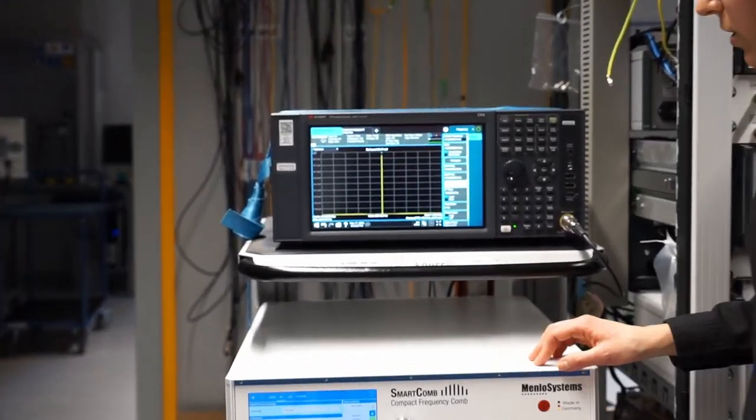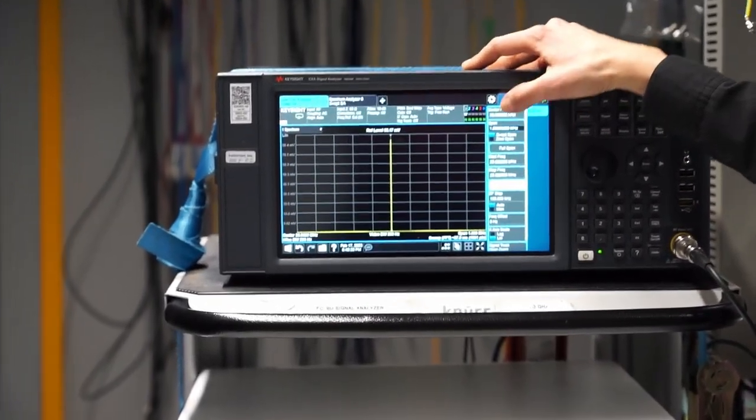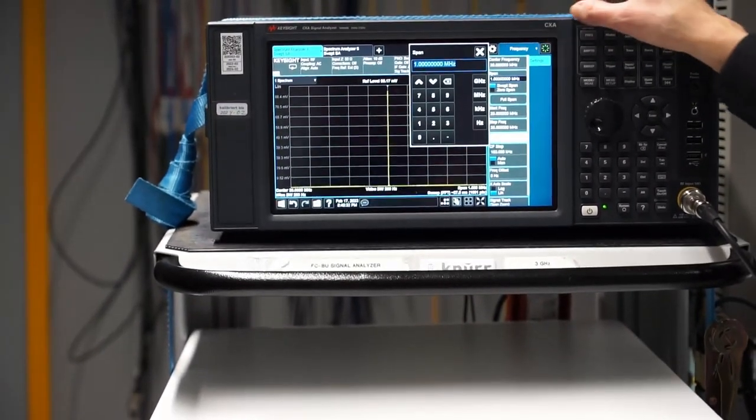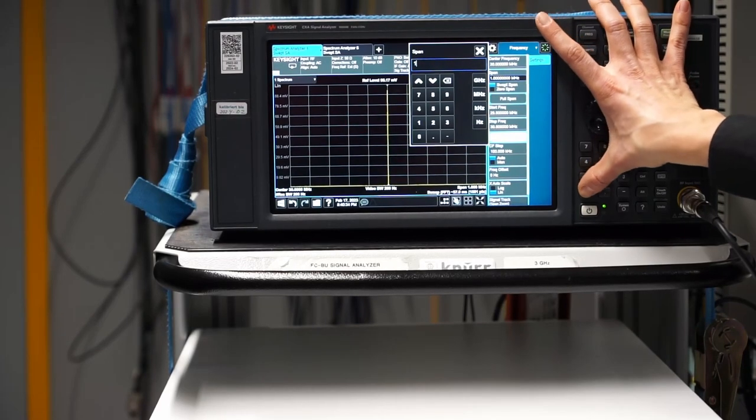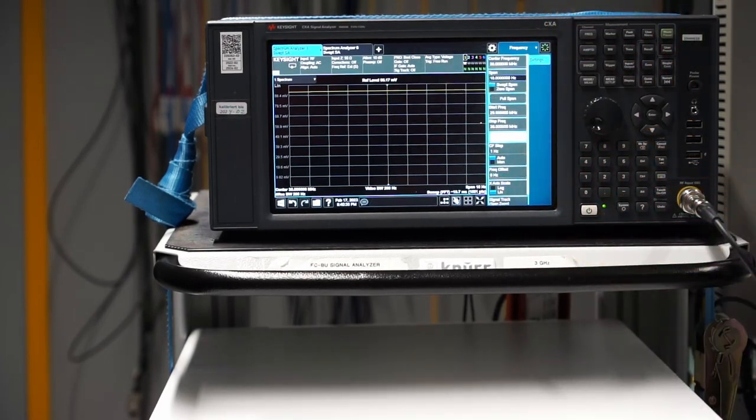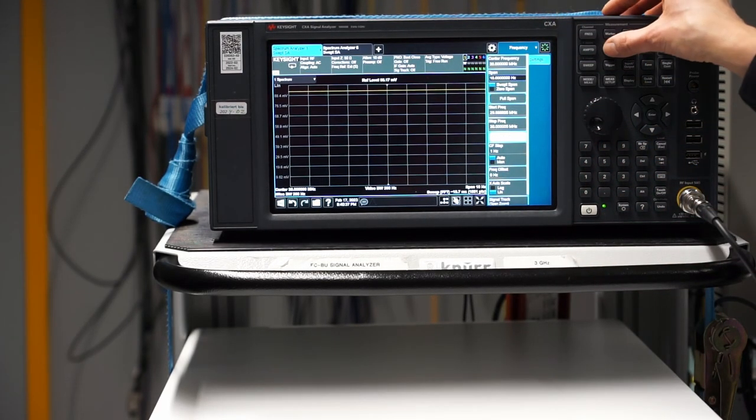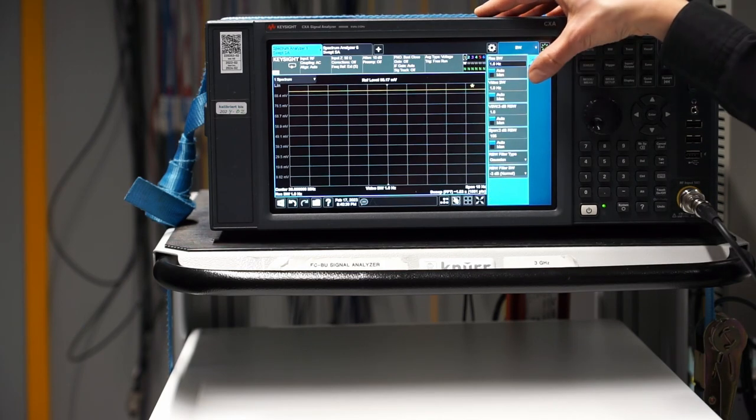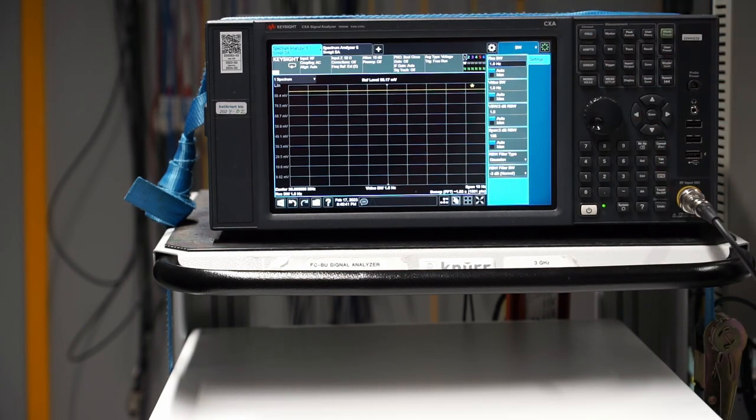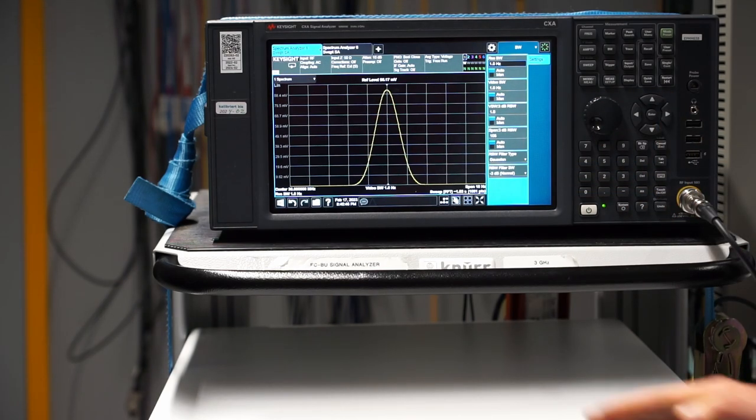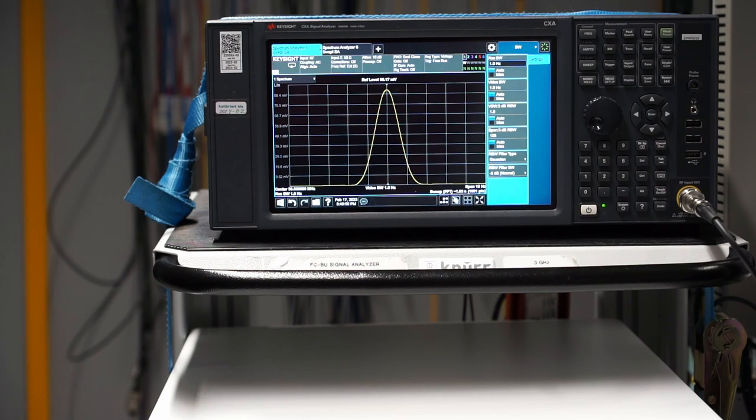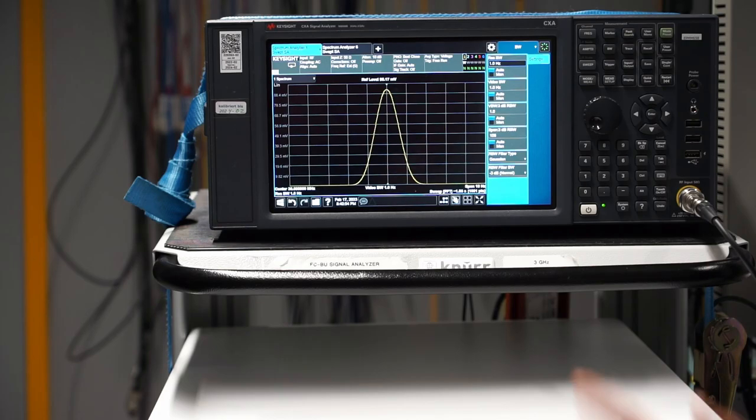Now you cannot see, but if we change the span to 10 Hz, and then very quickly the bandwidth, you will very nicely see how these modes have become 1 Hz, and also you can see that the ultra-stable laser has the same line width. That's all. Thanks.